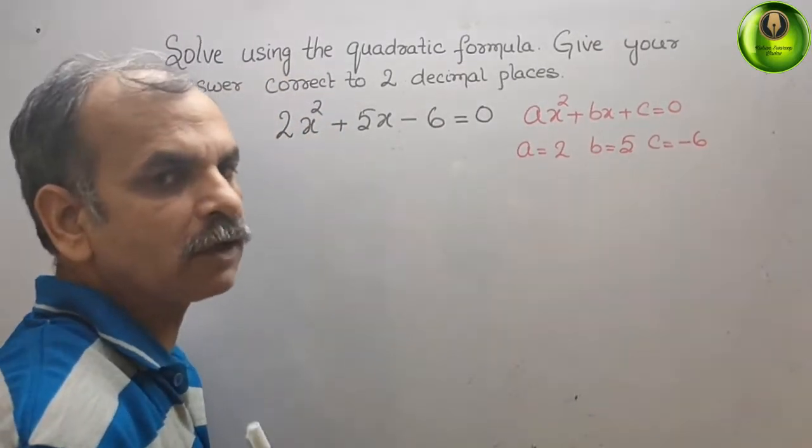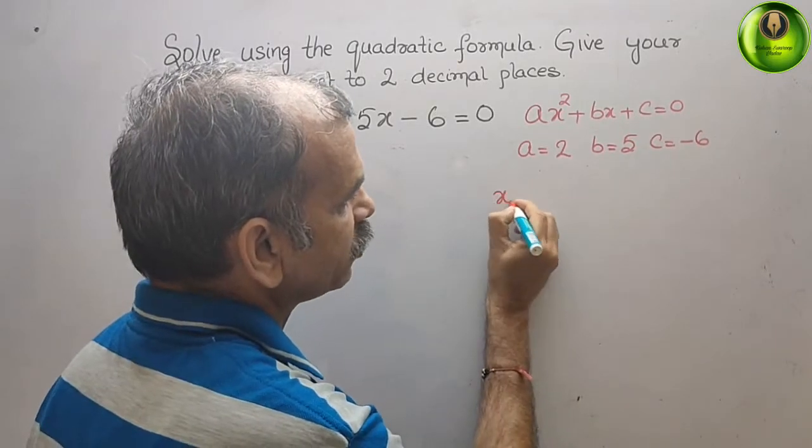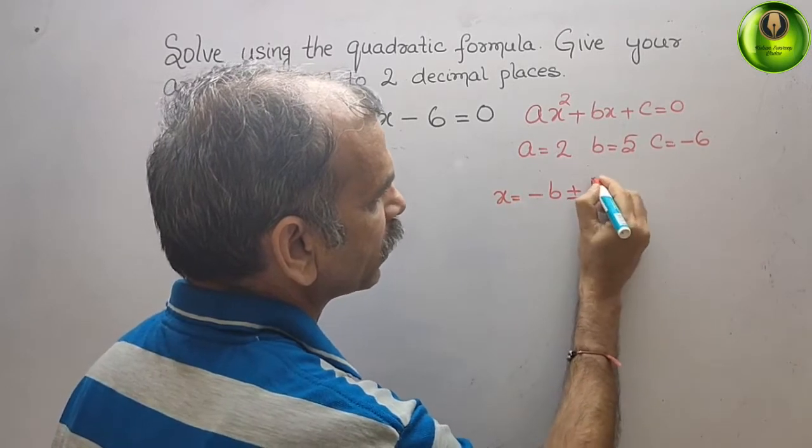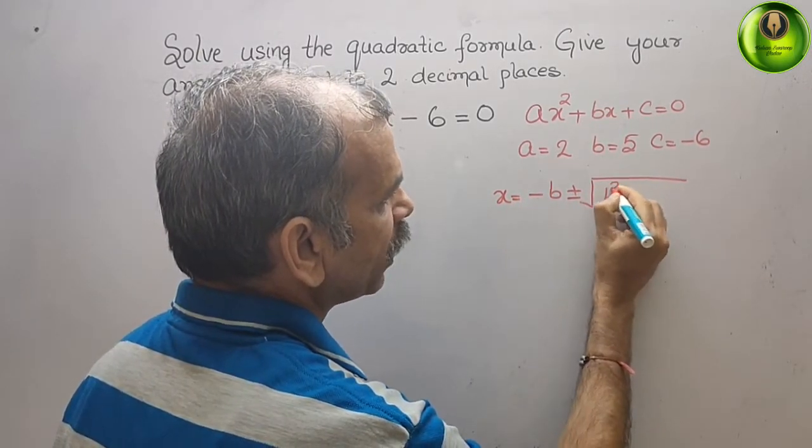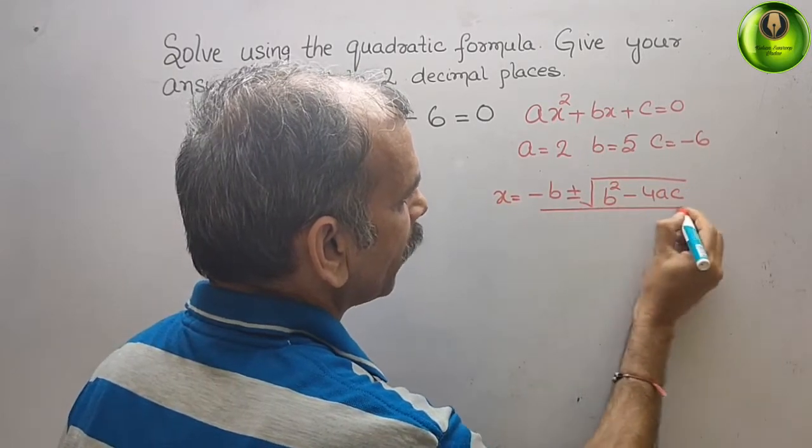Now we will write the formula for our quadratic equation. So what is that? x = (-b ± √(b² - 4ac)) / 2a.